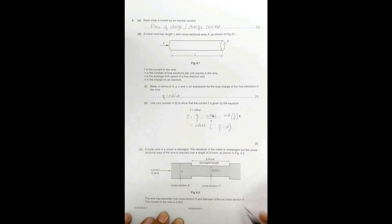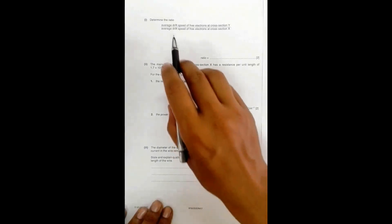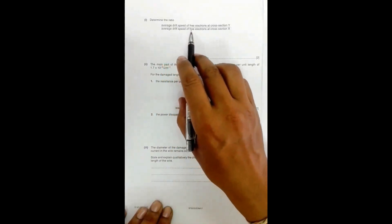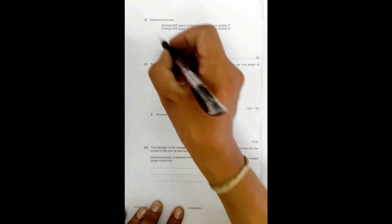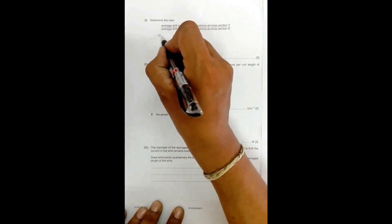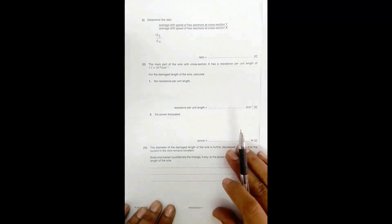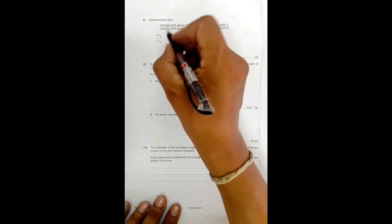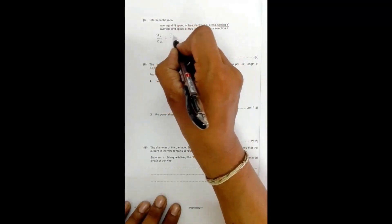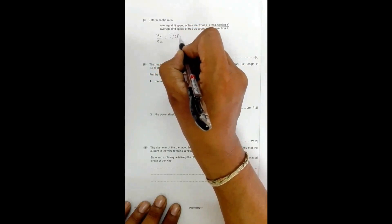The wire has diameter d at cross-section X and diameter 0.69d at cross-section Y. The current is 0.50 amperes and is the same throughout the wire. We need to find the ratio of average drift velocity at cross-section Y to that at cross-section X, that is Vy/Vx.